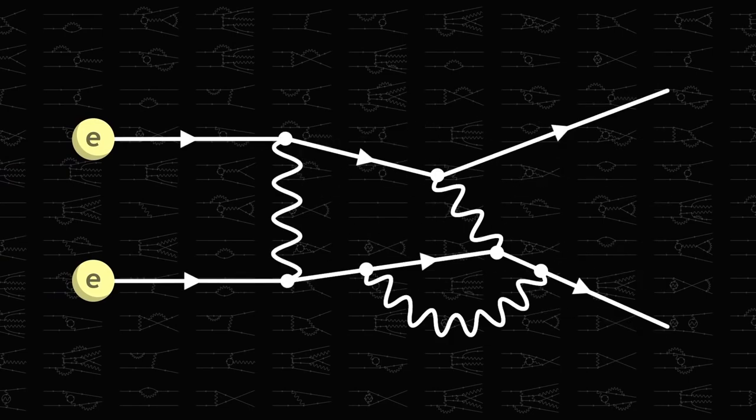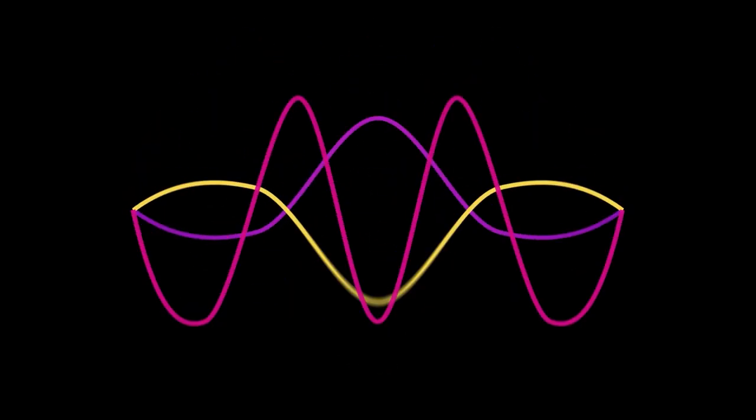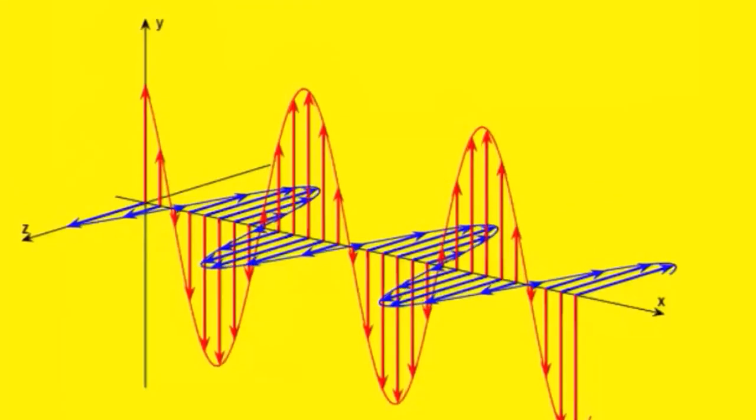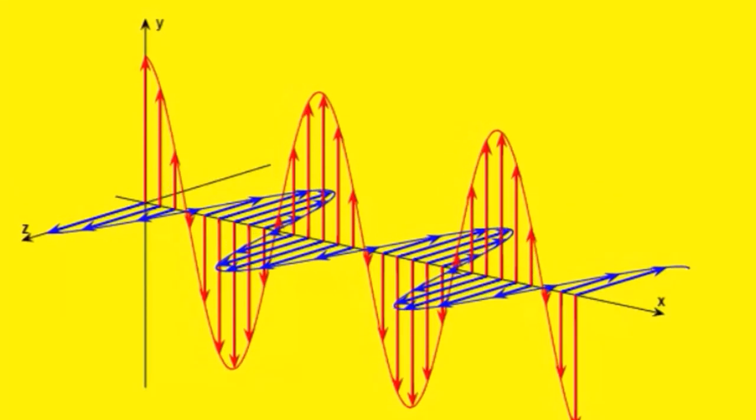A particle may travel to a specific location in one way with a positive amplitude and another with a negative amplitude. If that occurs, the two amplitudes can cancel each other out, resulting in a total amplitude of 0, which would indicate that the phenomenon would never occur.